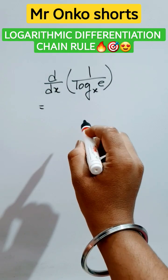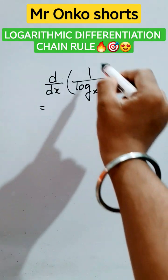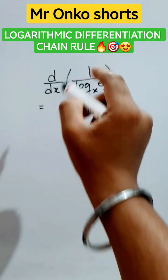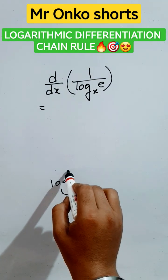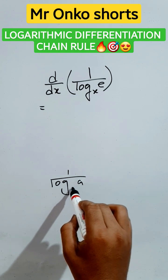Hello students, welcome to Mr Onko shorts. Today we will learn how to find the derivative of logarithmic functions. First, apply the property of logarithm: if 1 by logarithm of a to the base b is given, then it can be reduced as logarithm of b to the base a.